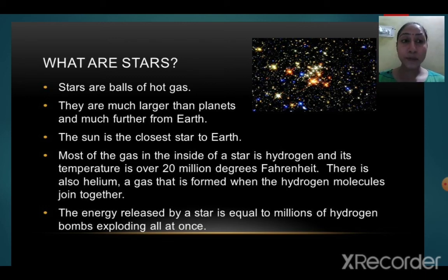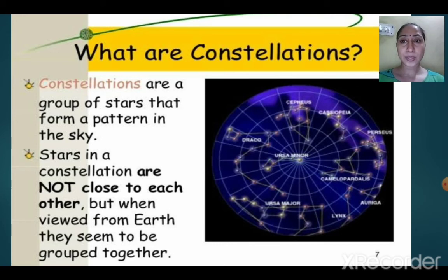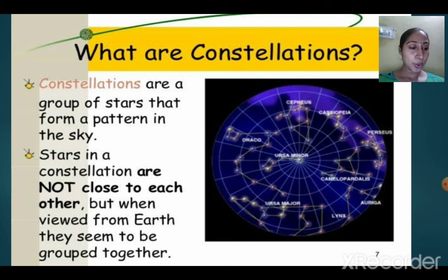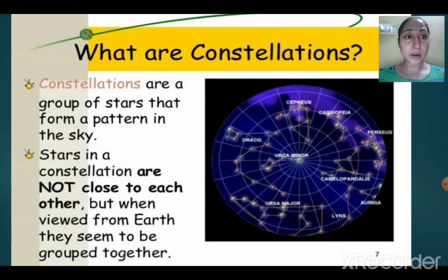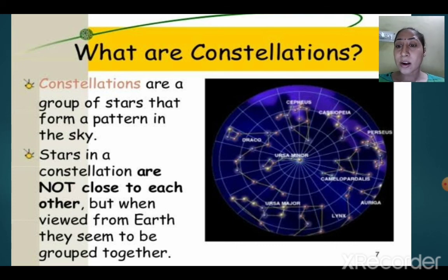When stars form some pattern they are called constellations. Constellations are the group of stars that form a pattern in the sky. There are even more than 88 known constellations, like Orion, Ursa Major, Ursa Minor, Scorpius — these are the important constellations which we can see.